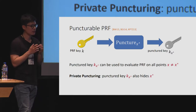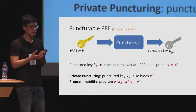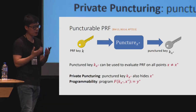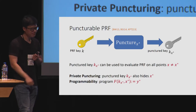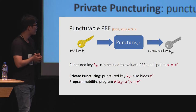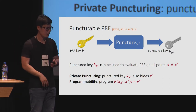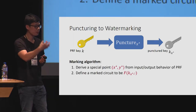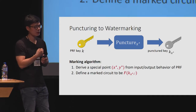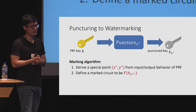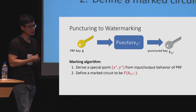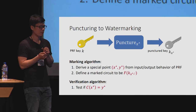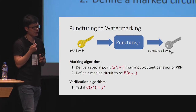We can define the notion of private puncturing, which says that the punctured key does not reveal any information about the point at which it is punctured. We can also define programmability, which says that given some specific output Y star, the puncturing algorithm can puncture a key such that the PRF evaluation at the punctured point evaluates exactly to Y star. If you had a puncturable PRF satisfying all these properties, it is relatively straightforward to construct a watermarking scheme. The marking algorithm punctures the PRF key, deriving a special input-output pair X star and Y star, and programs this pair into the truth table of the PRF. The verification algorithm then tests whether the circuit evaluates to Y star on input X star.